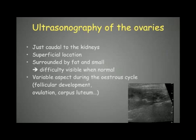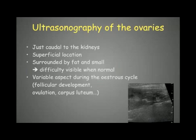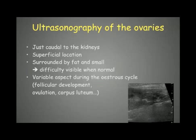Normally the ovaries are located just caudal to the kidneys. As we can see here, this is the left kidney and here is the left ovary. They have quite a superficial location at this level and are surrounded by fat, so they can be quite small and difficult to see with ultrasound when they are normal. They can change in appearance with the estrous cycle: there will be follicular development with anechoic cysts visible within the ovary, then ovulation occurs and the corpus luteum becomes visible, also composed of hypoechoic to anechoic cavities.